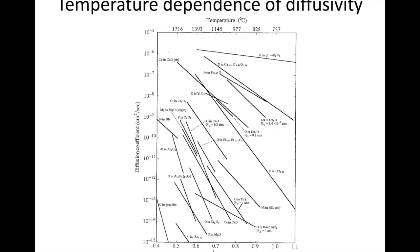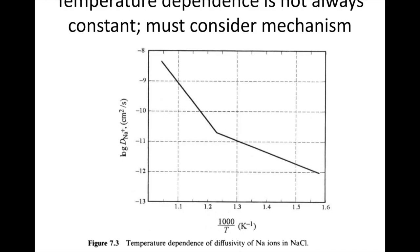The important thing to keep in mind is that almost all of these, if not all, show linear relationships. That means the empirical expression we've developed for diffusivity as a function of temperature is holding — it's linear throughout, therefore it has a single slope. That means the activation energy is the same throughout.